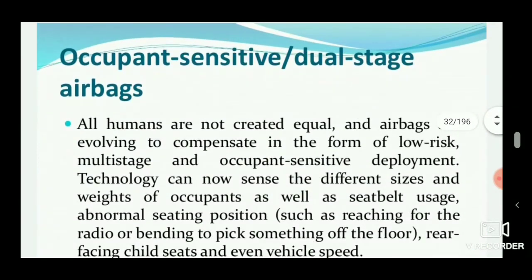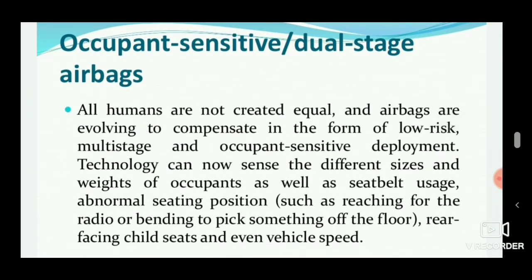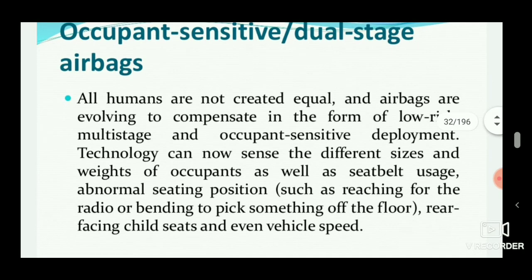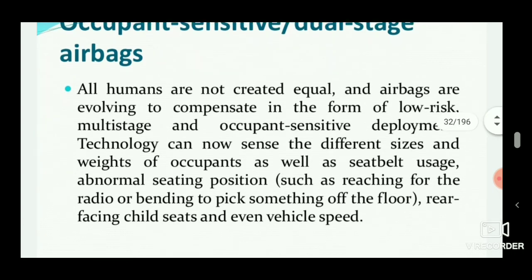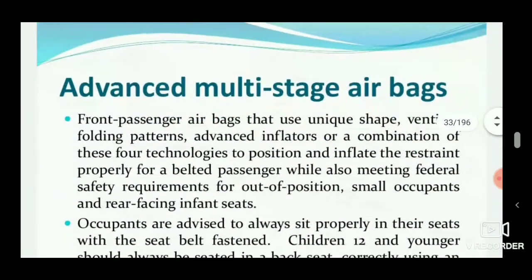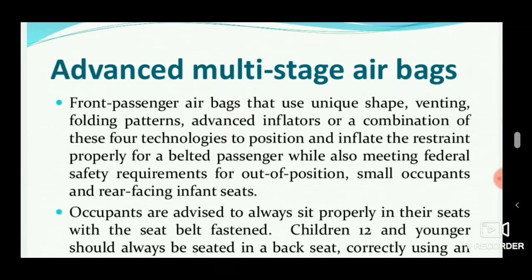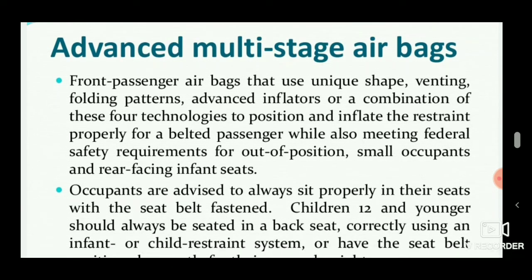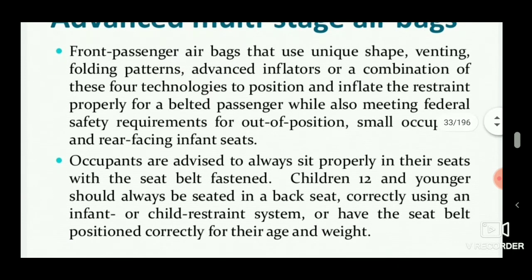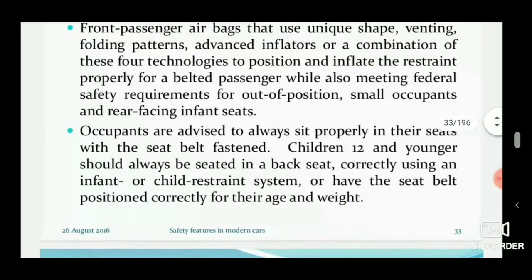Occupant safety dual-stage airbags: all humans are not created equal, so airbags are evolving in the form of low-risk, multi-stage, and occupant-sensitive deployment. The airbag system uses factors such as seat belt usage, abnormal seating position — like reaching for the radio or bending to pick something off the floor — rear-facing child seats, and even vehicle speed. Multi-stage airbags use unique shape venting, folding patterns, advanced inflators, and a combination of technologies to properly restrain a belted passenger while also meeting federal safety requirements for out-of-position small occupants and rear-facing infant seats.